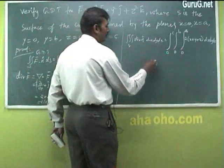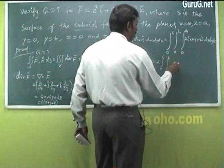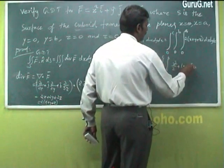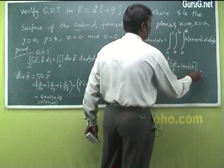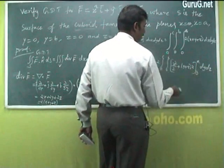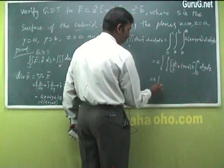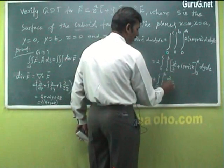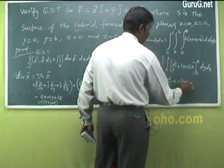Integrating with respect to x: 2 times the integral from 0 to c, 0 to b of [x²/2 + (y + z)x] from 0 to a dy dz. Substituting x = a gives 2 times the integral from 0 to c, 0 to b of (a²/2 + a(y + z)) dy dz.